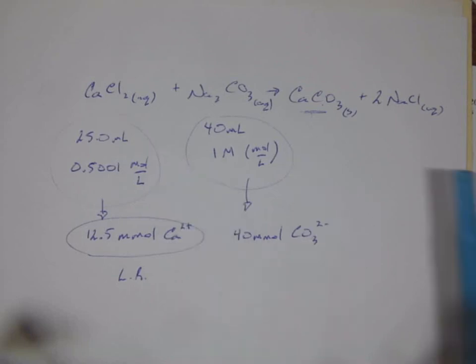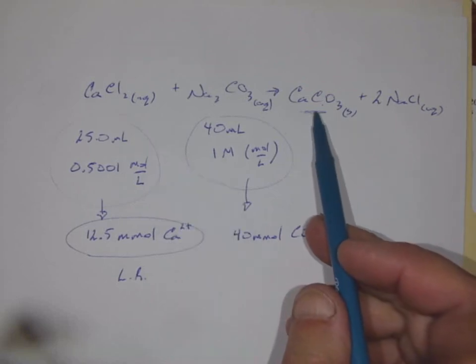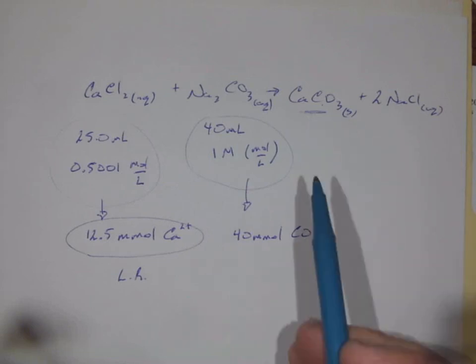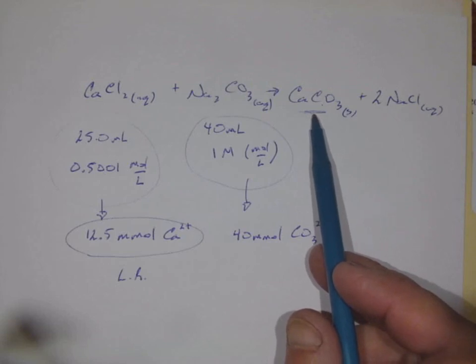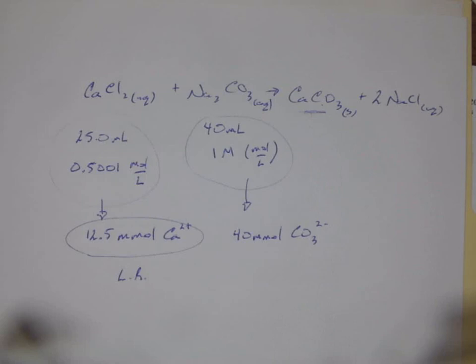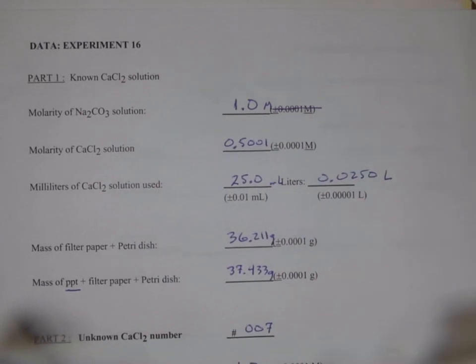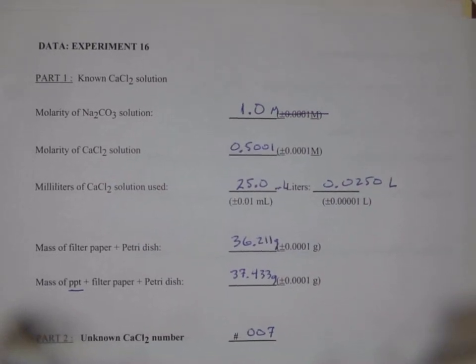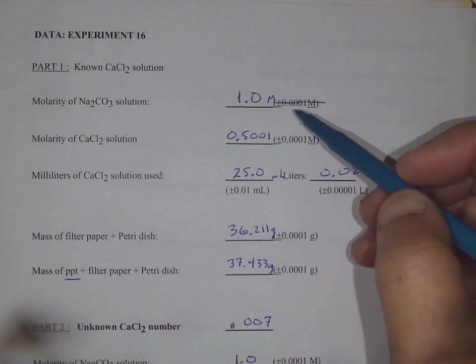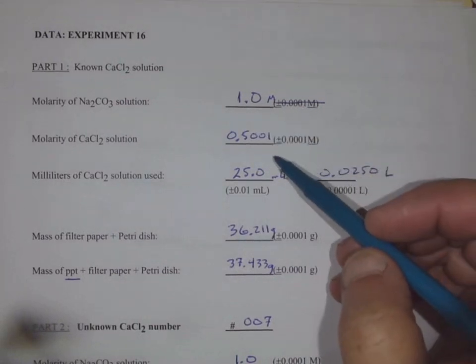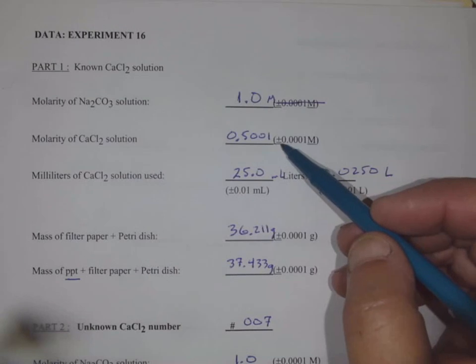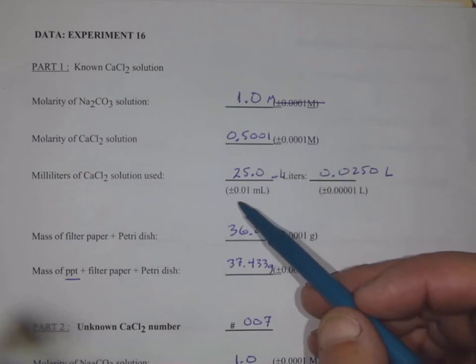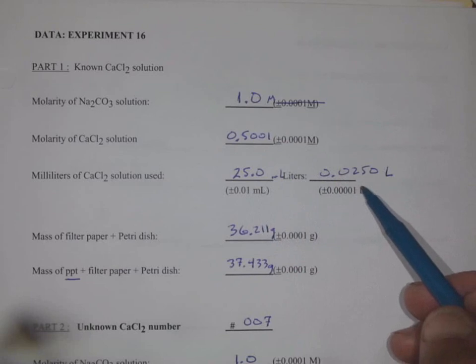So the actual process of doing this, we make them, we then filter the calcium carbonate through a piece of filter paper that was on that original slide. We dry it in the oven to drive off all the water, and then we weigh it on a second day of lab. So let's just say we've done all that, and here's our data. On your data sheet, go ahead and write this down. We've got the original molarity of the sodium carbonate as one molar. The molarity of the calcium chloride solution for the known solution is 0.5001 molar.